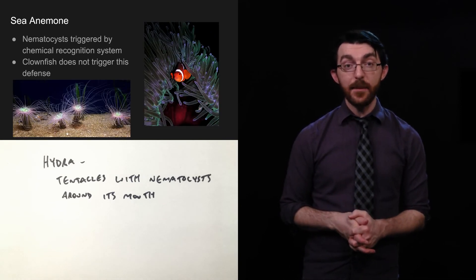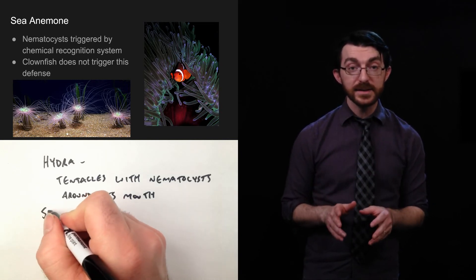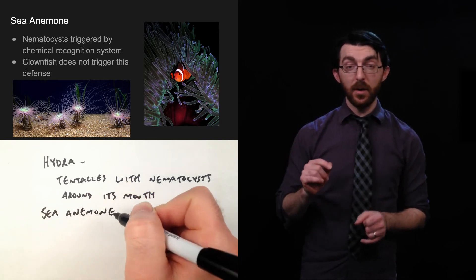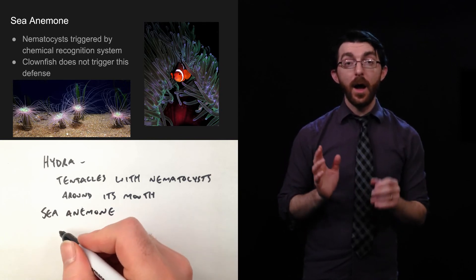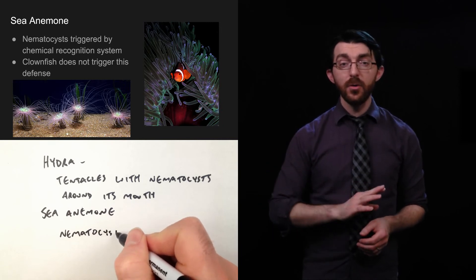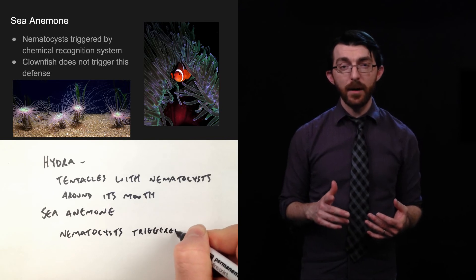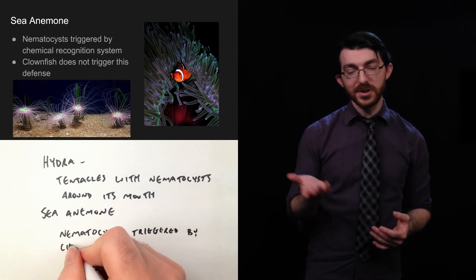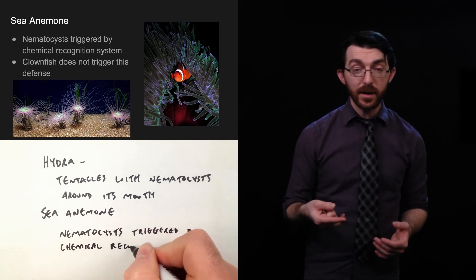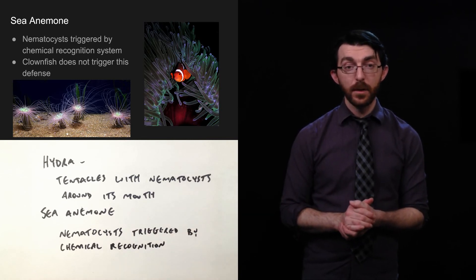So, now we've got sea anemone. These are part of phylum cnidaria. These also have nematocysts. They are triggered by a chemical recognition system. So, they have to identify the thing that they are stinging. Funny enough, I'm talking about clownfish. Clownfish don't trigger this defense. They have some adaptation that permits them to go into, or I should say, between the polyps of a sea anemone and not trigger its nematocyst release. So, that makes a great symbiotic relationship.